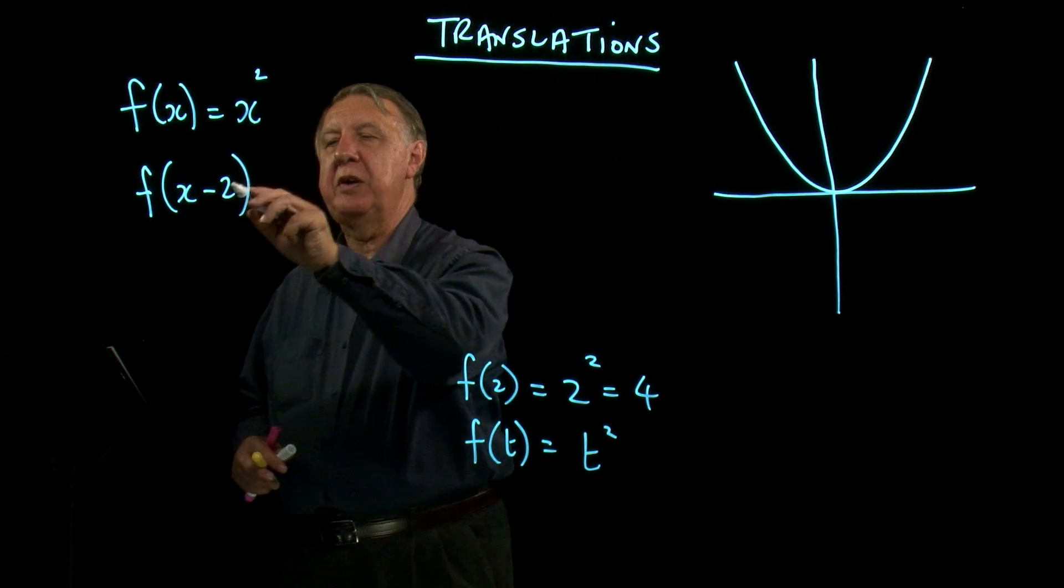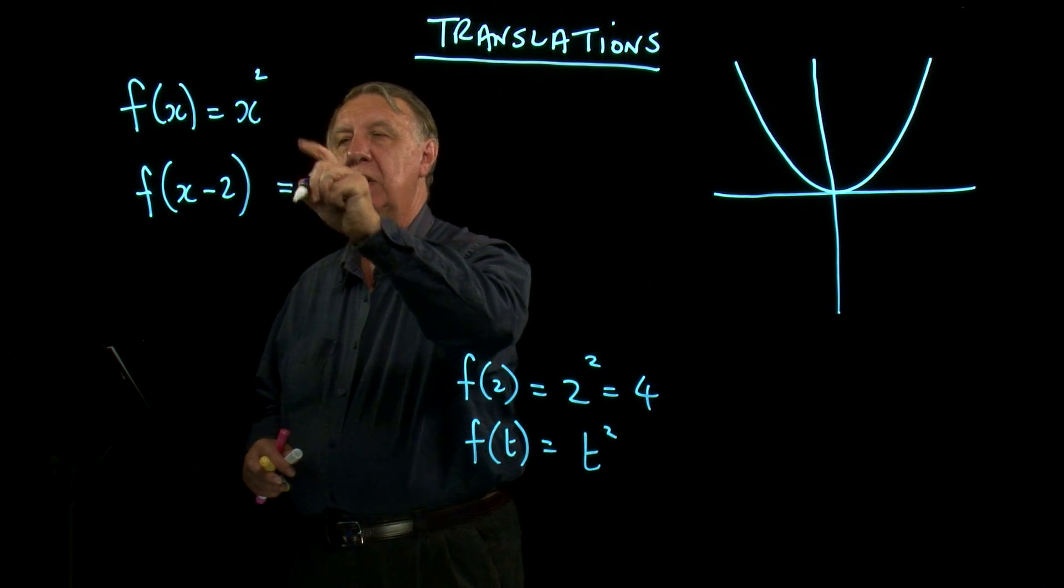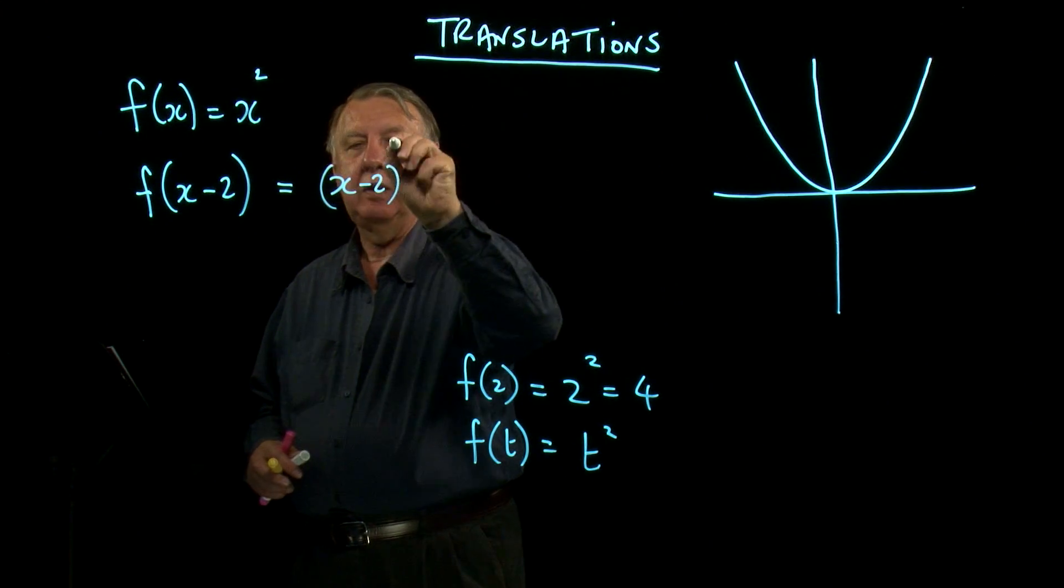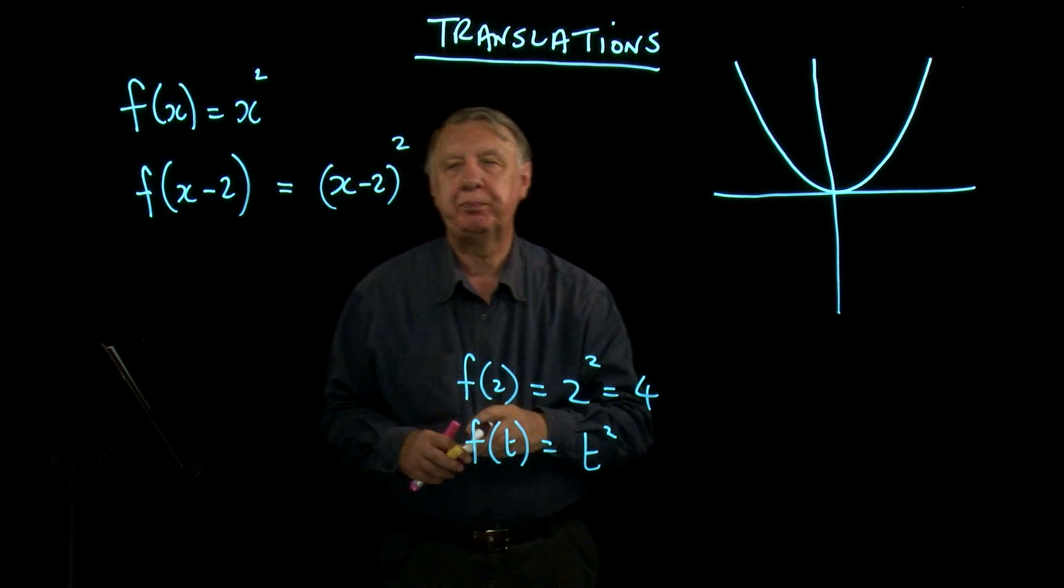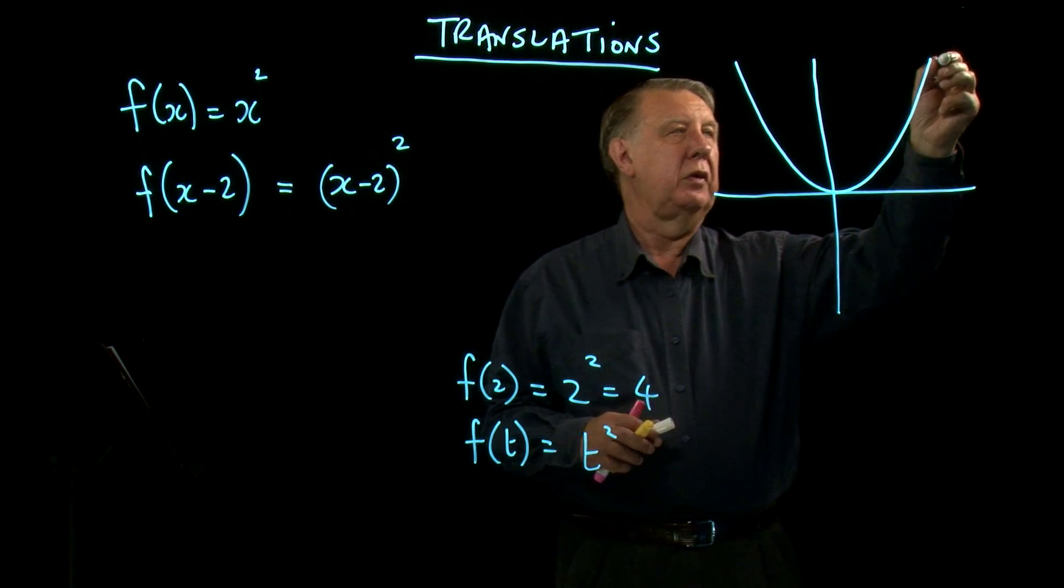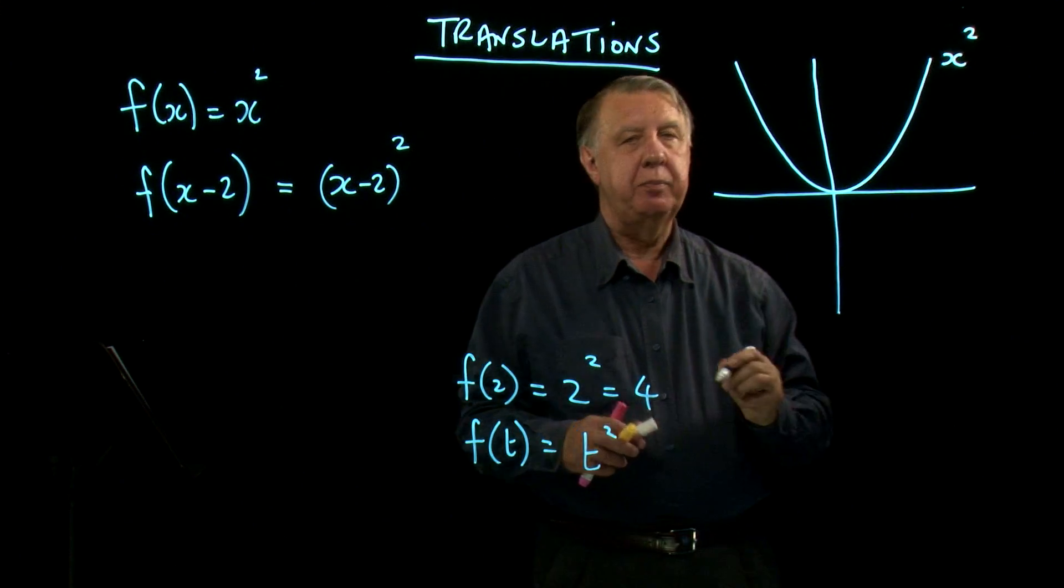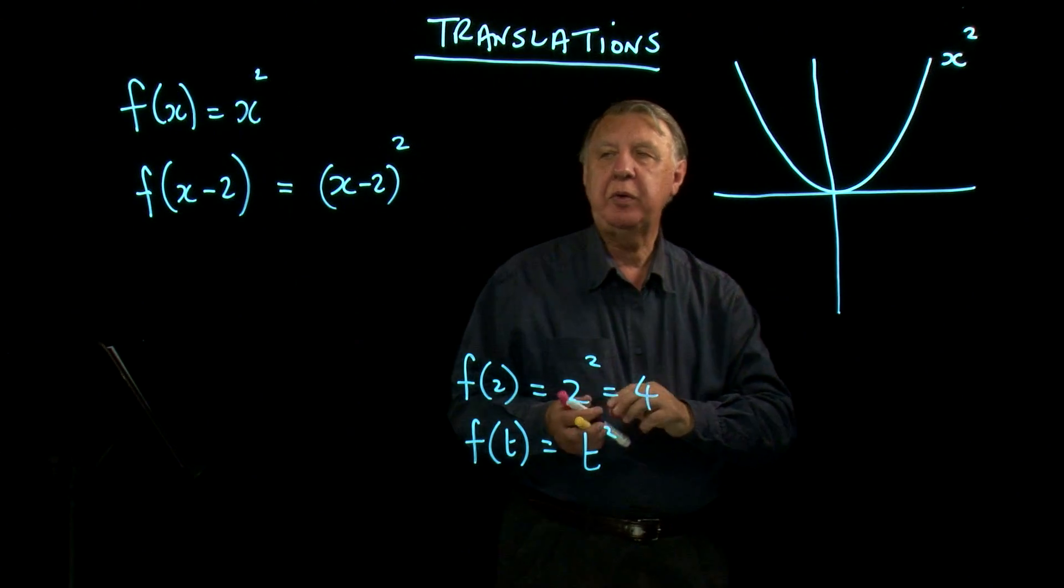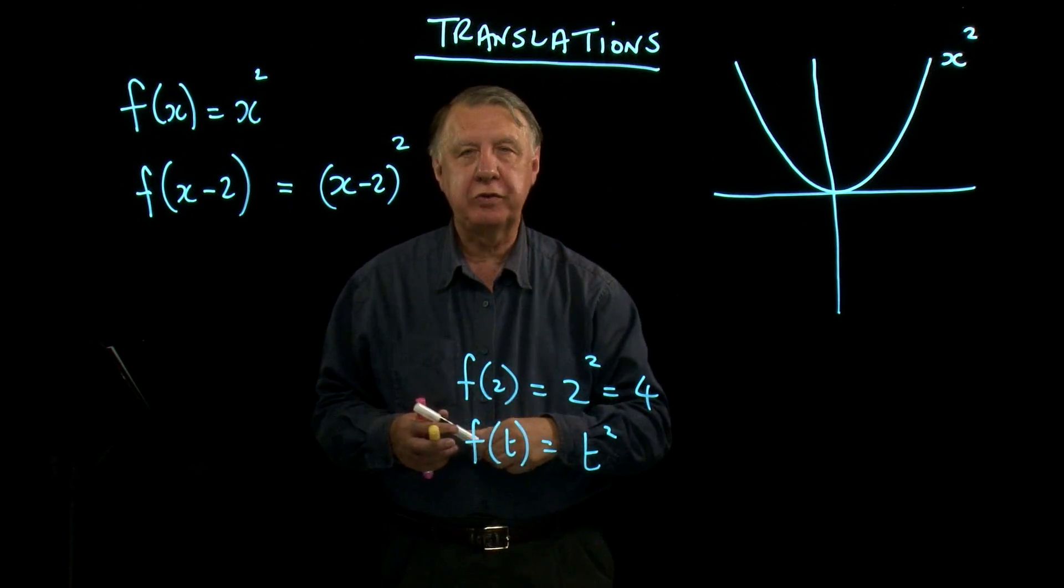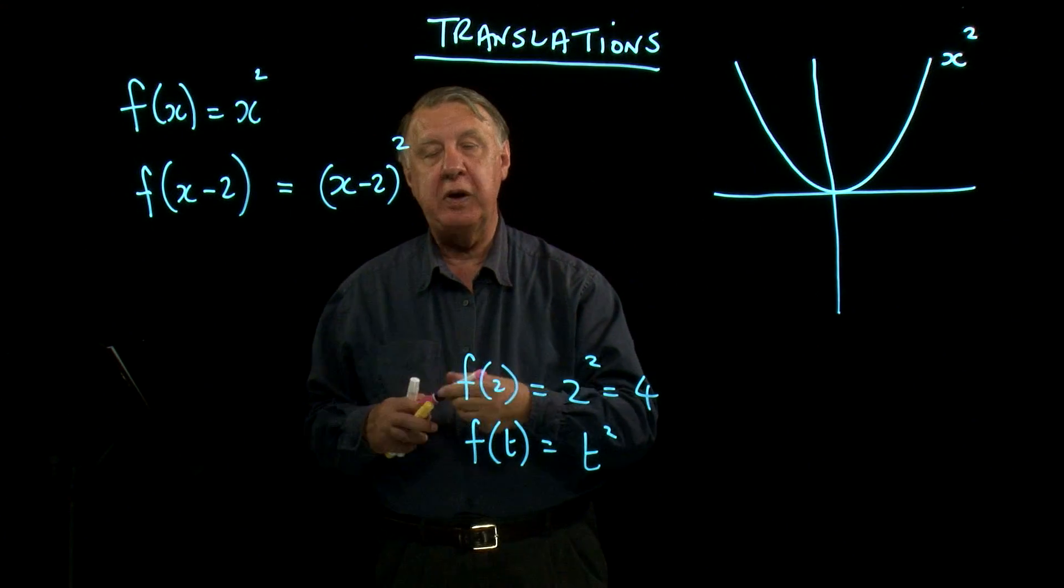So function x minus 2 means I replace x by x minus 2. Let's just mark the graph of x squared.